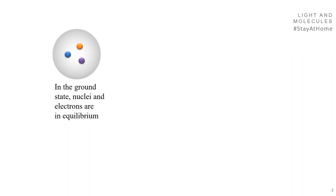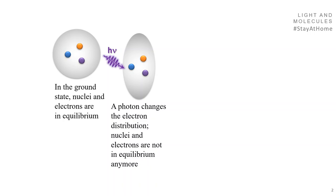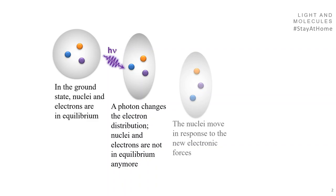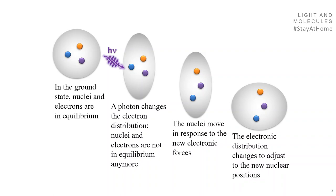This is a molecule — an ensemble of point charges surrounded by a cloud of negative charges. In the ground state, nuclei and electrons are in equilibrium. But a photon can change that situation: nuclei and electrons are no longer in equilibrium. There is an instantaneous modification of the electronic cloud that reacts to the photon, then the nuclei change in response to the electrons, and the electrons change in response to the nuclei, creating a feedback loop between the two subsystems.